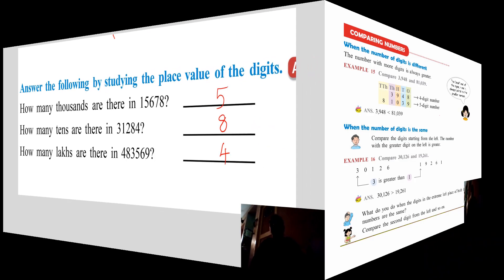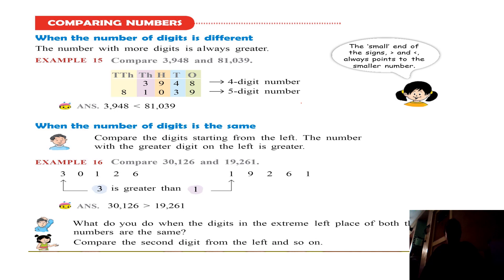Now let us move on to the next concept: comparing numbers. When two numbers are given, we are going to compare them and find which is the greater number and which is the smaller number. There are two methods for comparing numbers. The first method is when the number of digits is different. Let us look at an example and you will understand it easily.